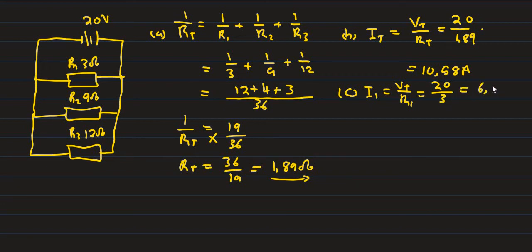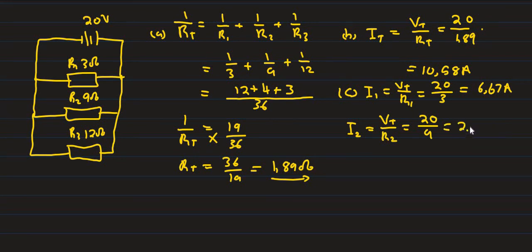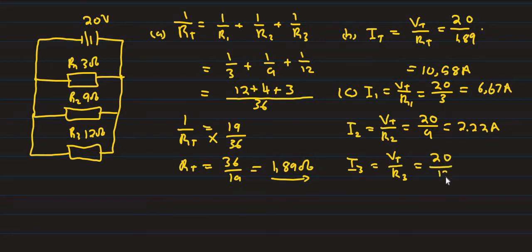I2 equals V total over R2. 20 divided by 9 equals 2.22 amperes. Current through resistor 3: I3 equals V total over R3. V total equals 20, R3 equals 12. 20 divided by 12 equals 1.67 amperes. So we check: 6.67 plus 2.22 plus 1.67 equals 10.58 amperes — confirmed.